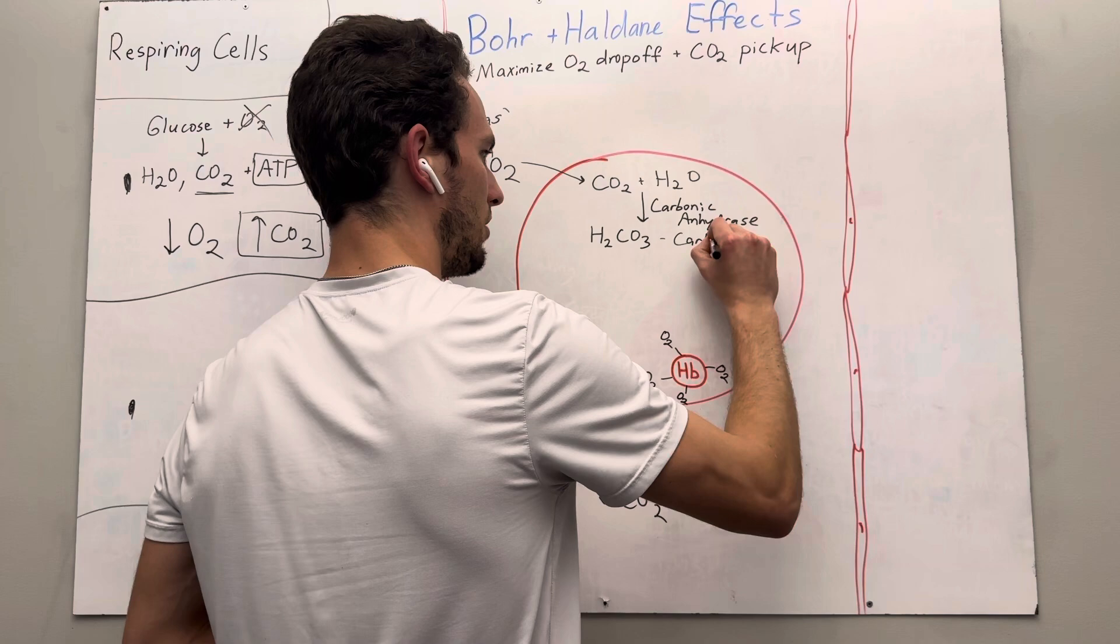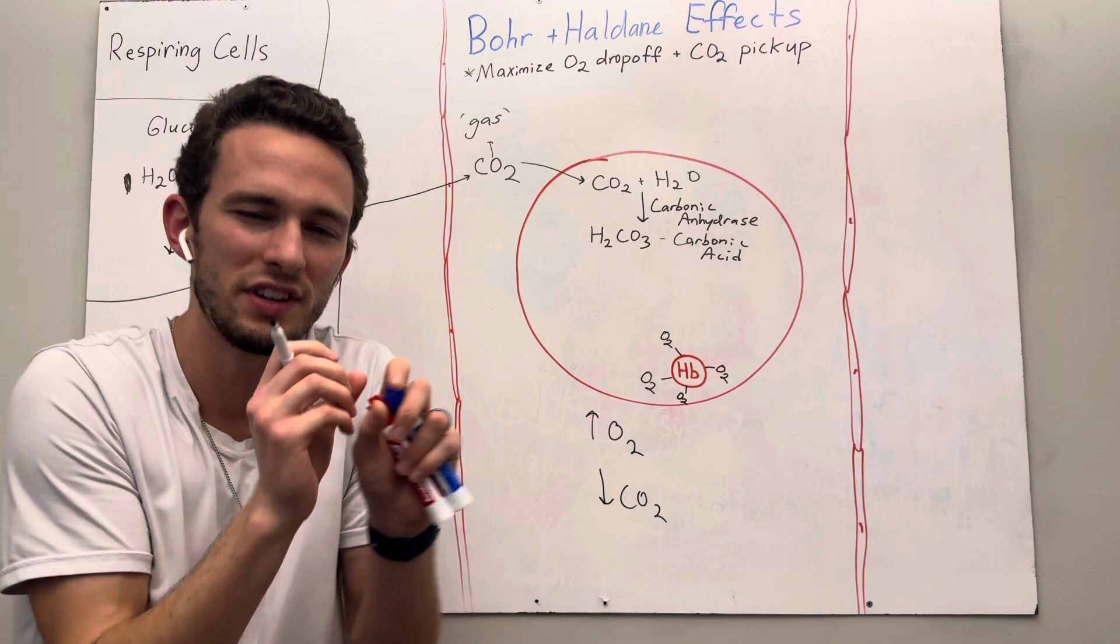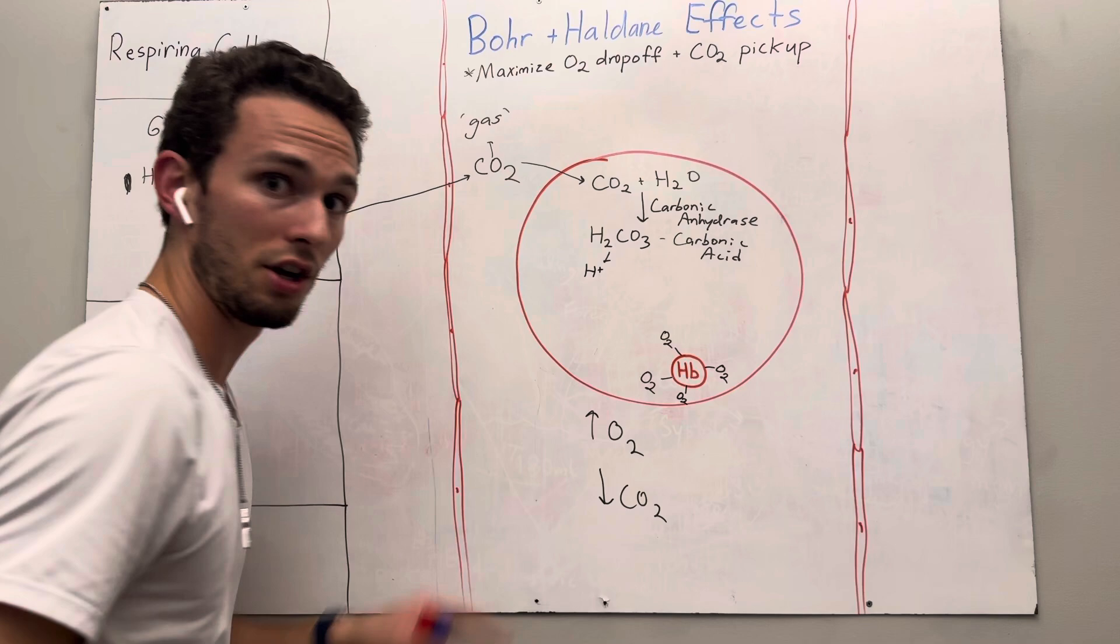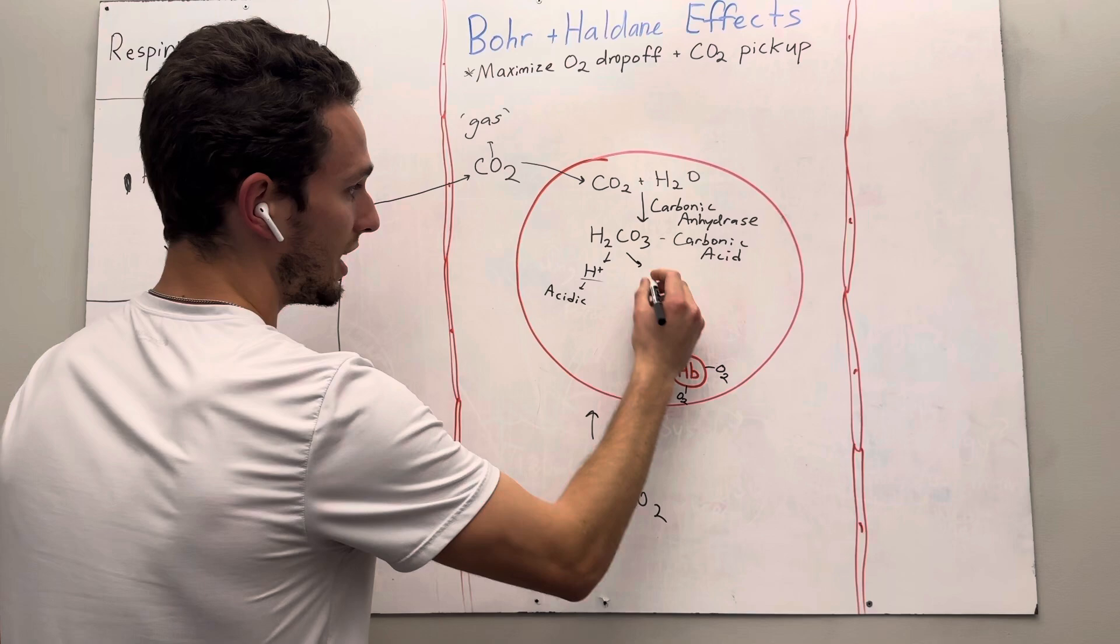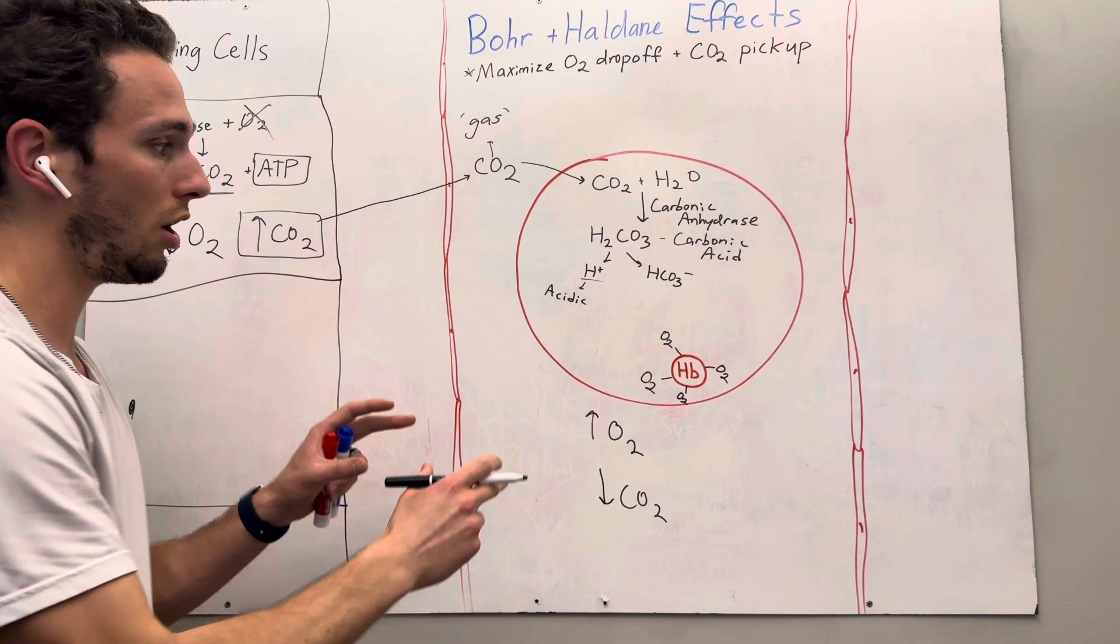I said this is carbonic acid, right? And if you know anything about acids, acids like to dissociate. What that means is they like to dissolve into two different things. One thing they're going to dissolve into is hydrogen ions. So hydrogen ions, when this carbonic acid splits apart, it's going to form hydrogen ions, and this is going to make the blood quite acidic. That's going to be important here in a second. It'll also dissociate into bicarbonate, HCO3 minus.